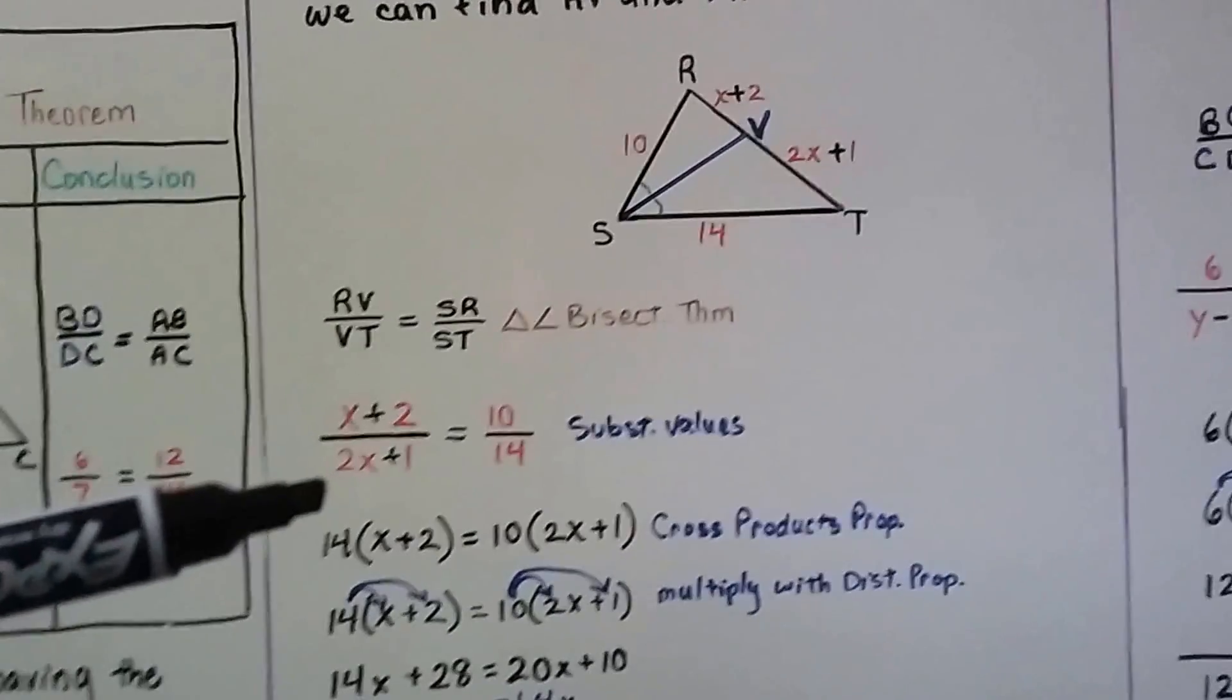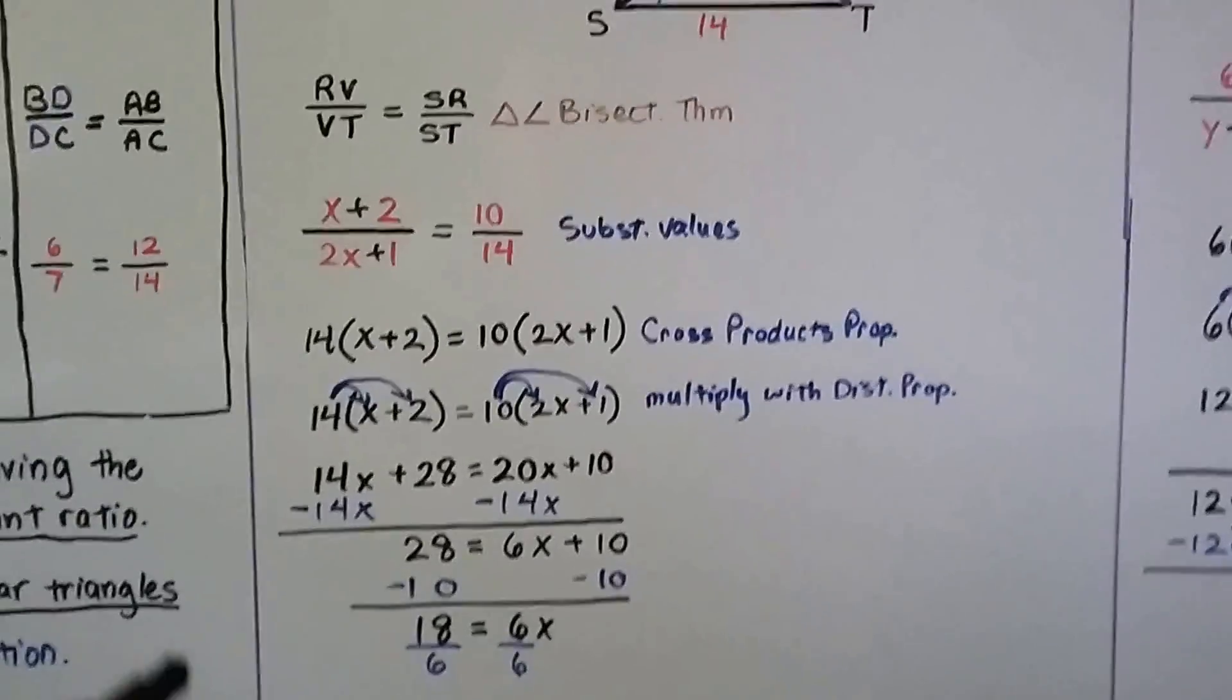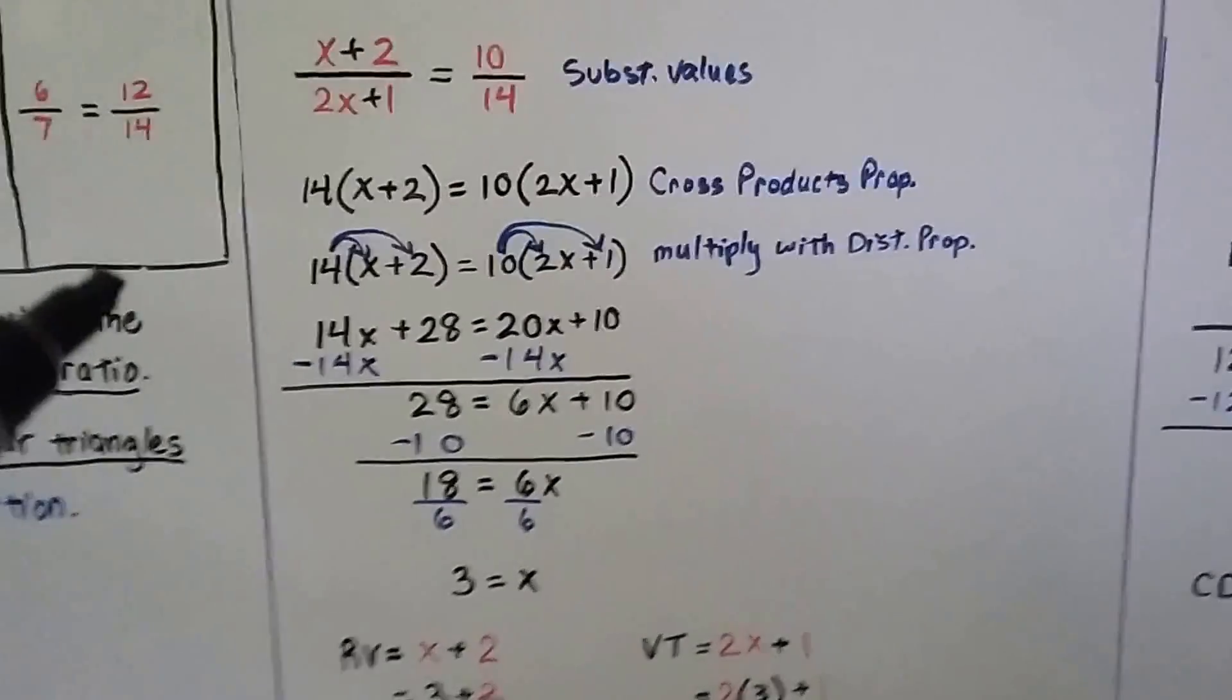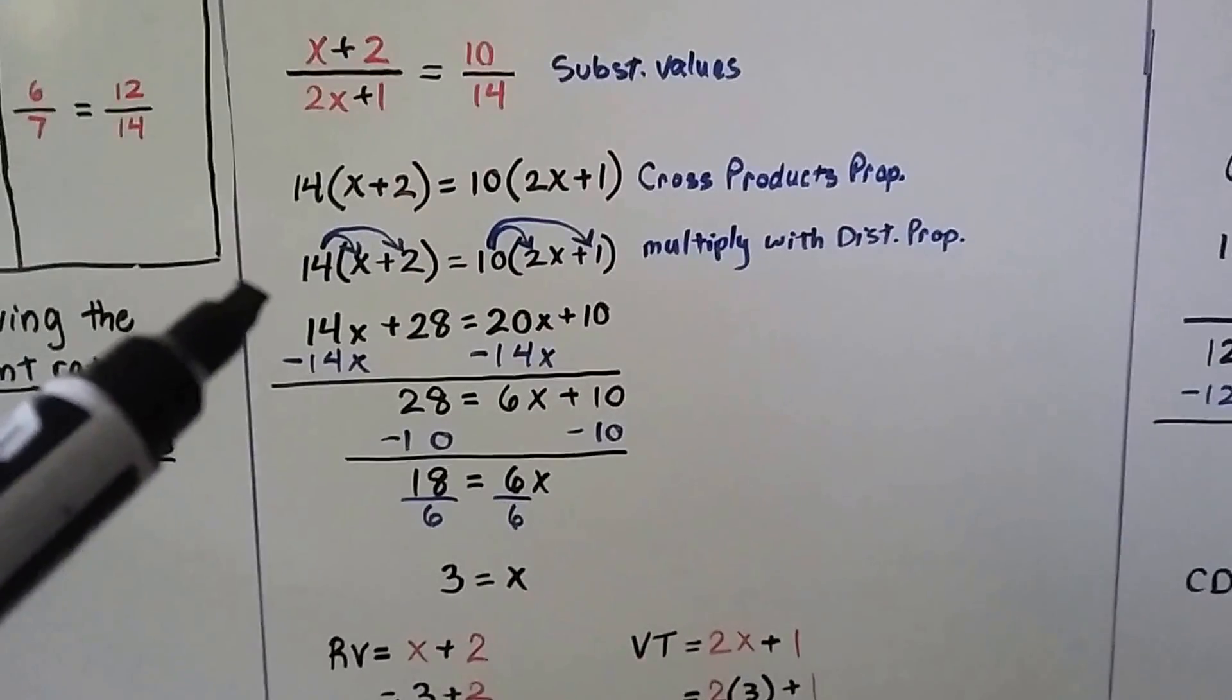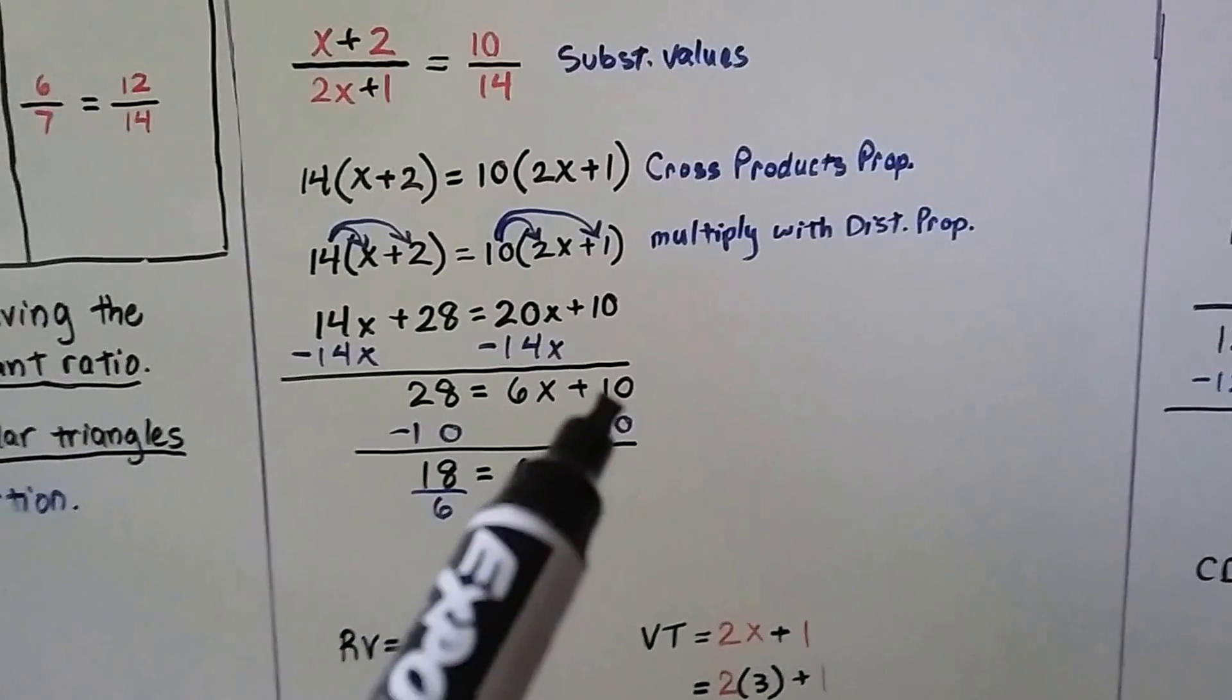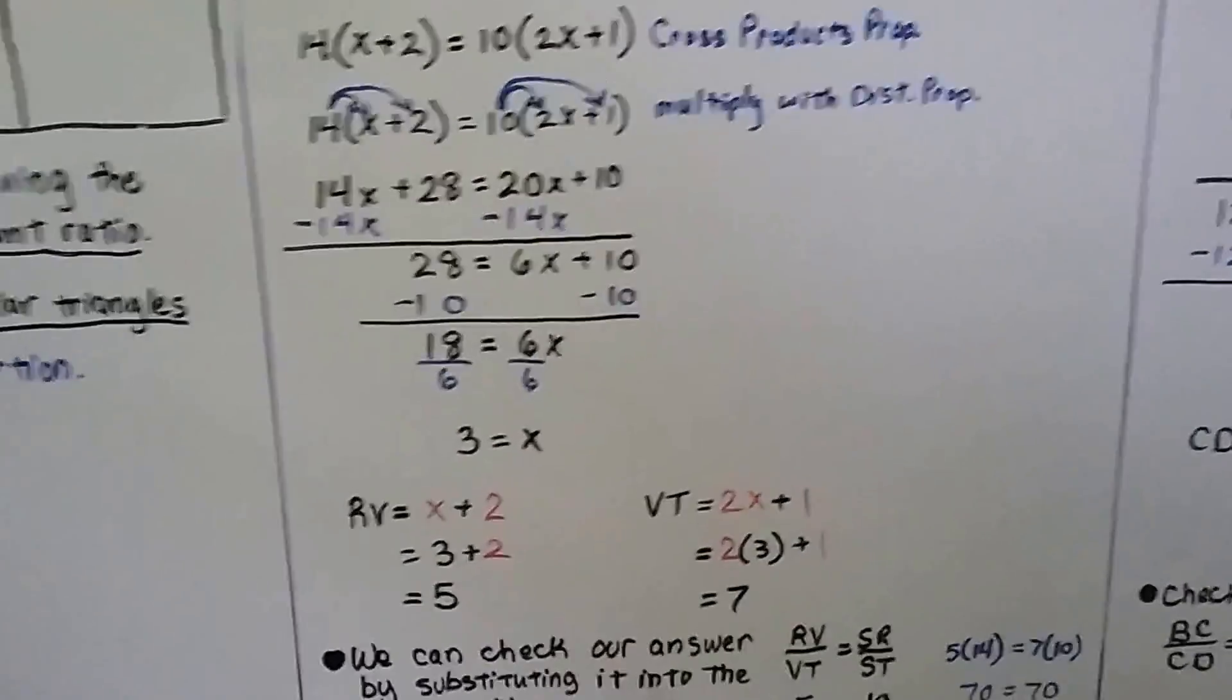We can substitute in the values. We've got x plus 2 over 2x plus 1 is equal to 10 over 14. We can do cross products property and get 14 times x plus 2 is equal to 10 times 2x plus 1. We can use the distributive property and we get 14x plus 28 is equal to 20x plus 10. We subtract 14x from both sides and get 28 is equal to 6x plus 10. We subtract this 10 and get 18 is equal to 6x. We divide both sides by the coefficient 6 and find that 3 is equal to x.